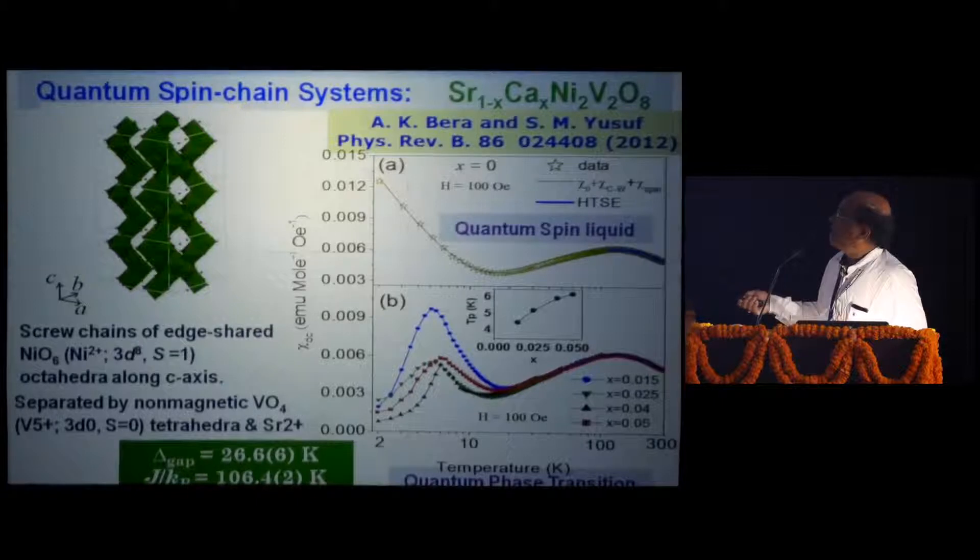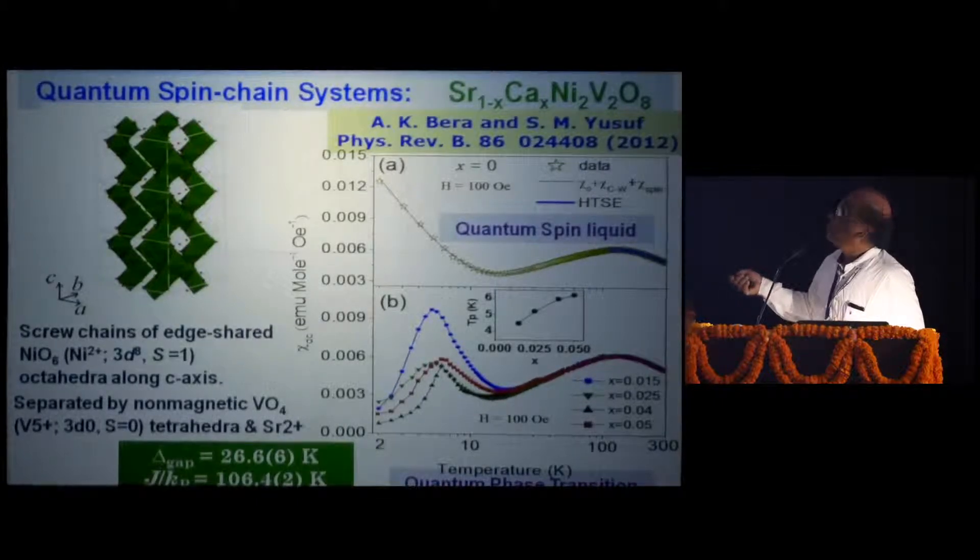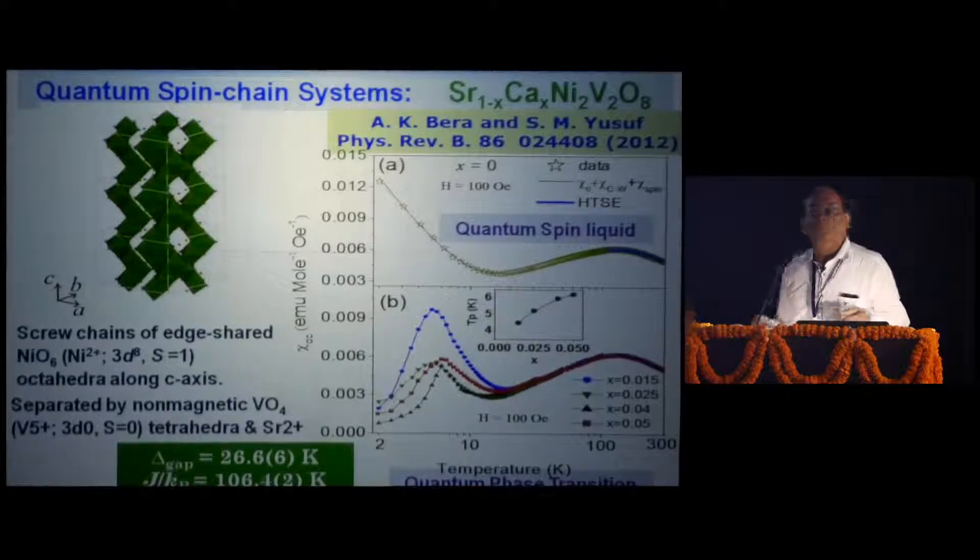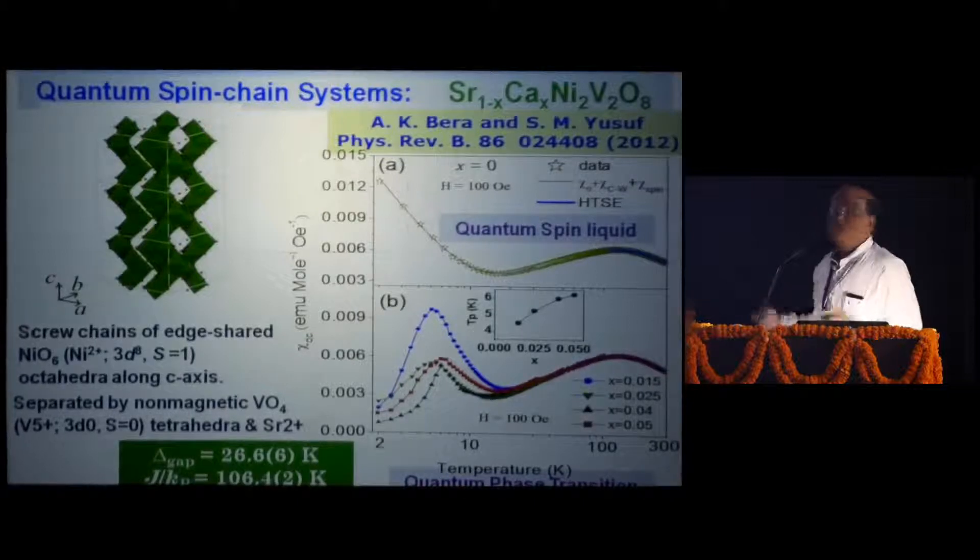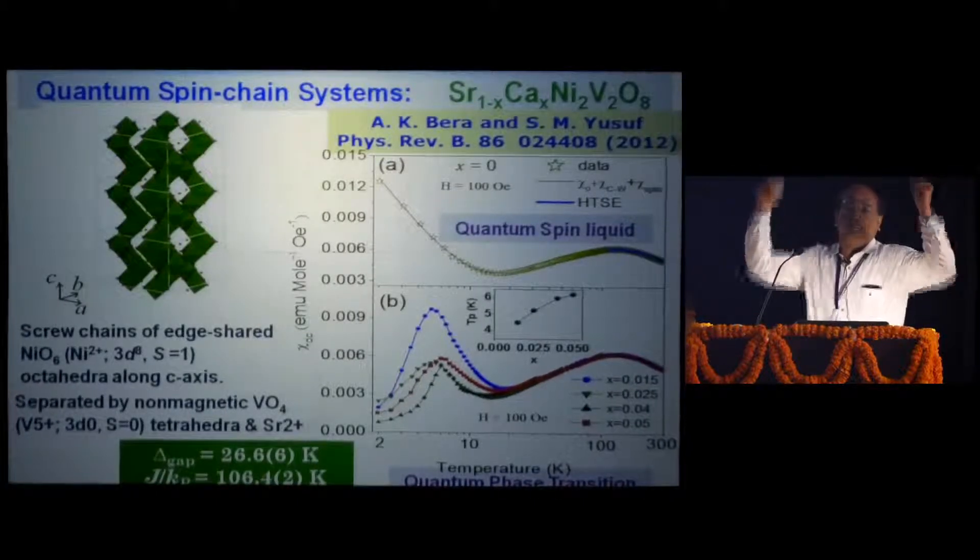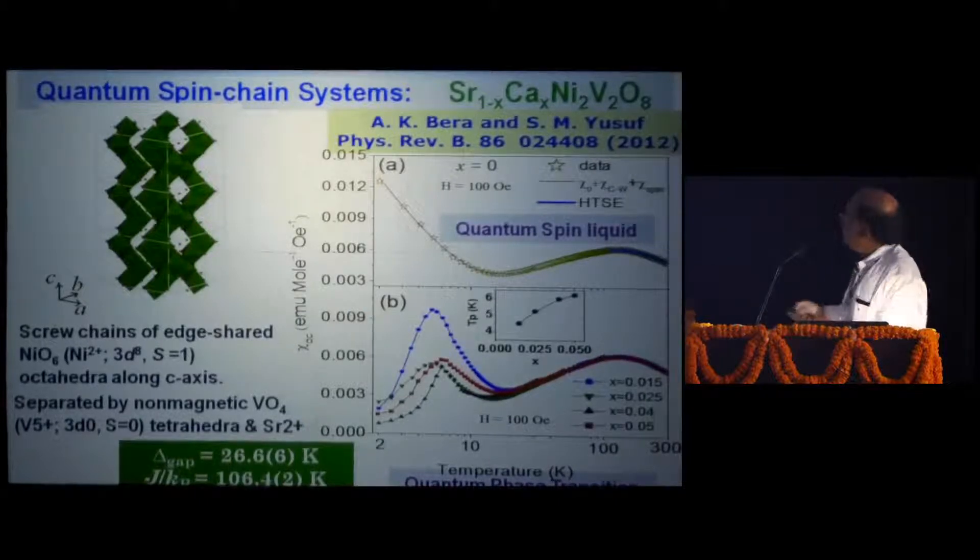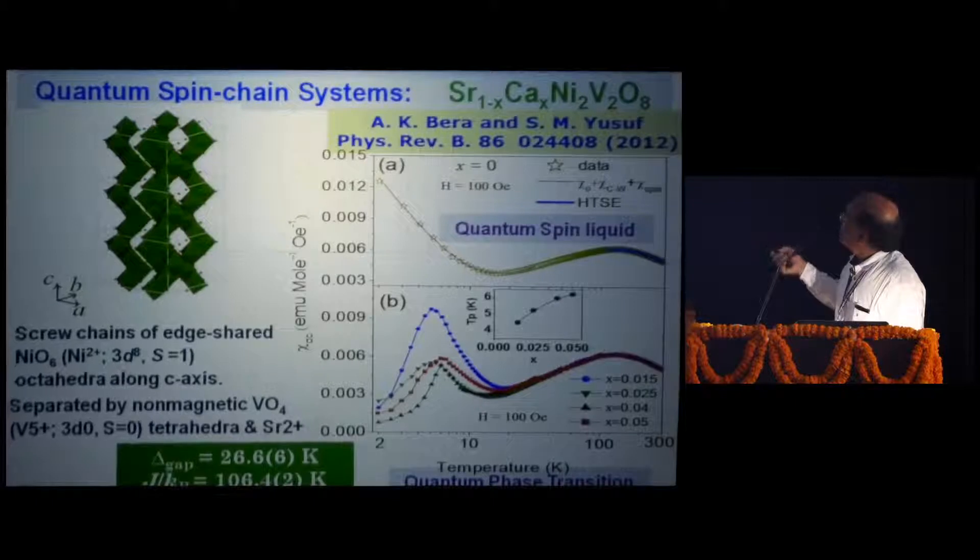Another point I am trying to tell you, that crystallographic structure, crystal structure dictates magnetism depending on how the spins are arranged in a crystalline material. Crystallography and magnetism, they go hand in hand. This kind of crystal structure we have got. This is a screw kind of chains of NiO6 nickel octahedra where nickel is in 2 plus, 3d8 states, so spin-1. Here the magnetism is based on the nickel spin-1.